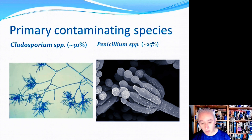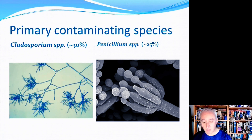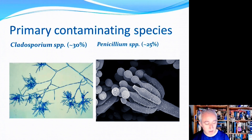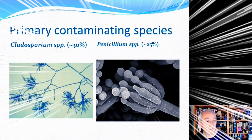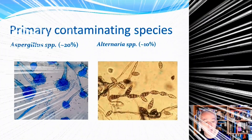Coming second is Penicillium, a common soil fungus found in slightly cooler, more moderate climates. It's a well-known food spoilage organism. The risk to pharmaceutical facilities is likely to come from the external environment — perhaps association with vegetation — and some form of ingress or transfer event causing that fungus to get into the facility.